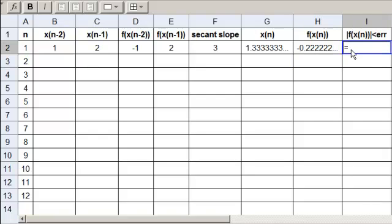So here we have equals. Absolute value is a function, so it gets parenthesis not brackets. Then we need H2 for the address, come outside, and we're checking whether it's less than the error. It should be false. Enter. False. OK. So everything looks good.